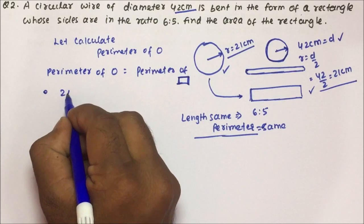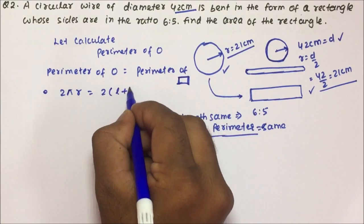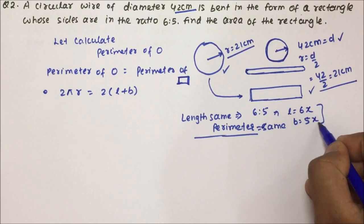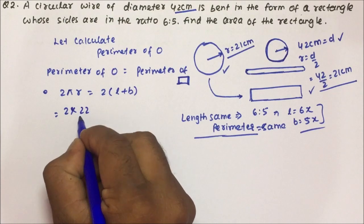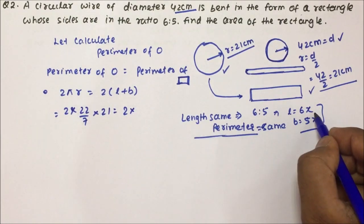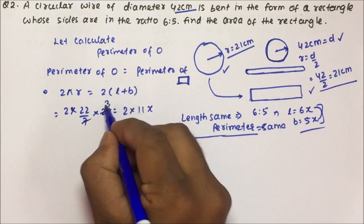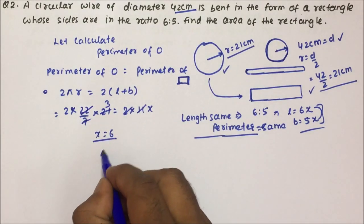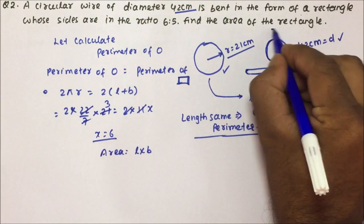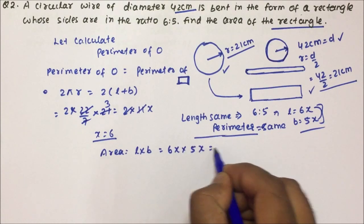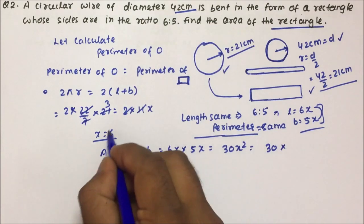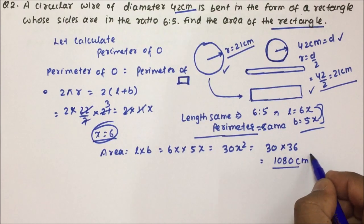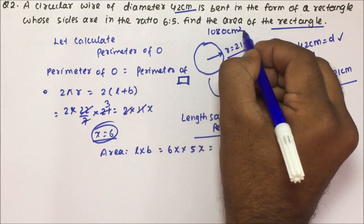Perimeter of circle = 2πr, and perimeter of rectangle = 2 × (length + breadth). Length and breadth are given in ratio, so length = 6x and breadth = 5x. So: 2 × (22/7) × 21 = 2 × (6x + 5x) = 2 × 11x. Solving this, x becomes 6. Area = length × breadth = 6x × 5x = 30x². So 30 × 36 = 1080 centimetres square. The area of the rectangle is 1080 cm².